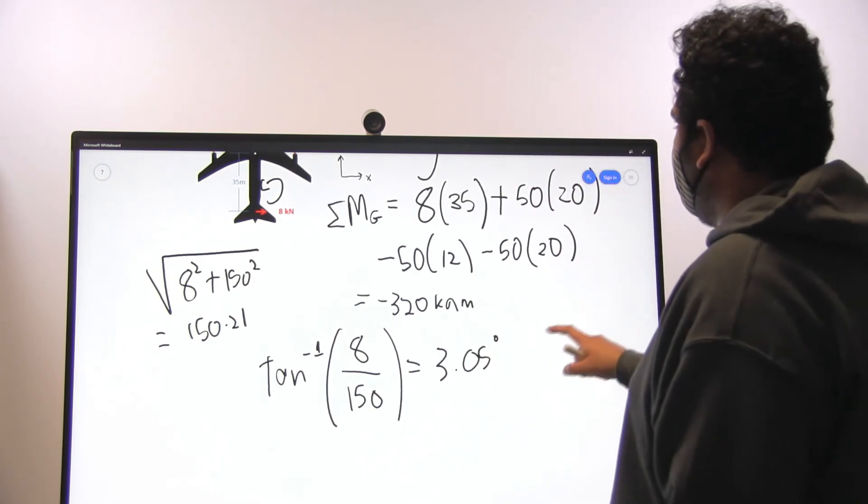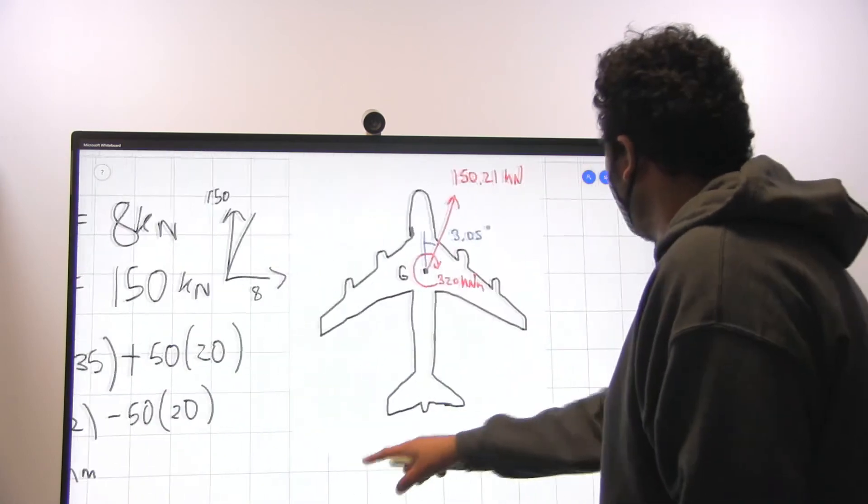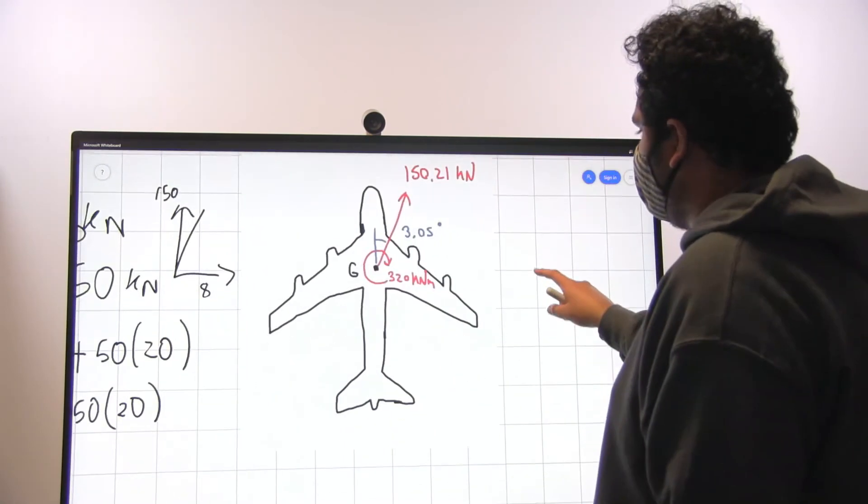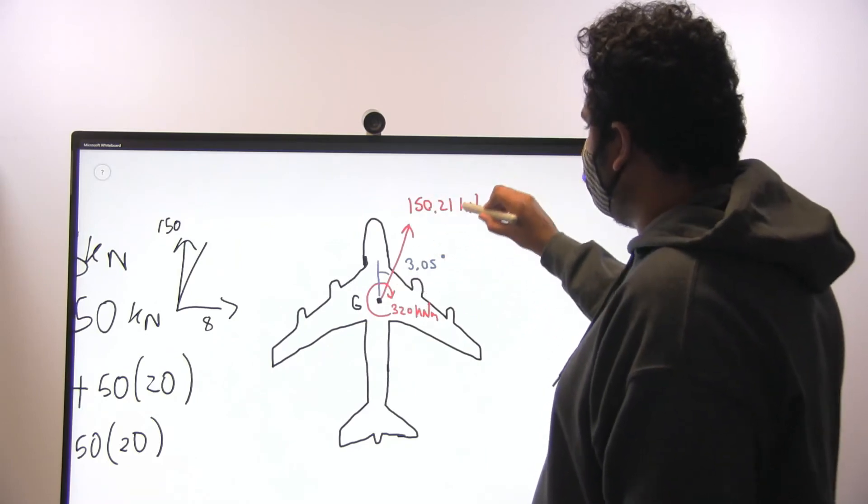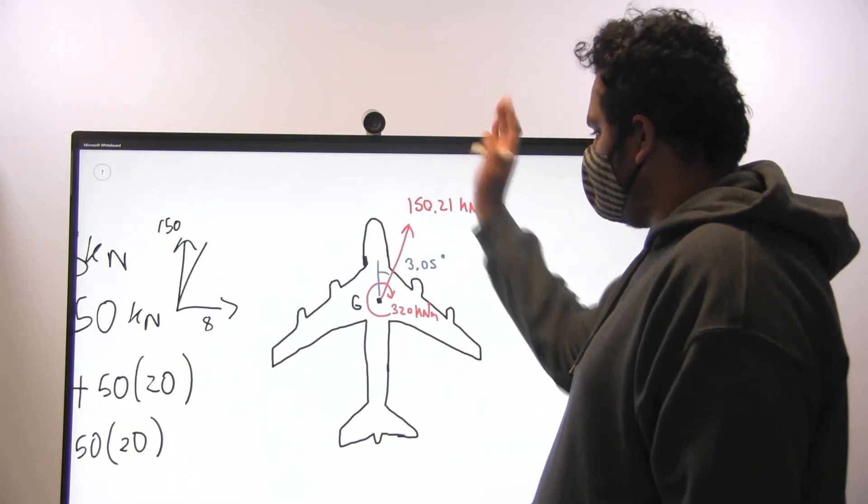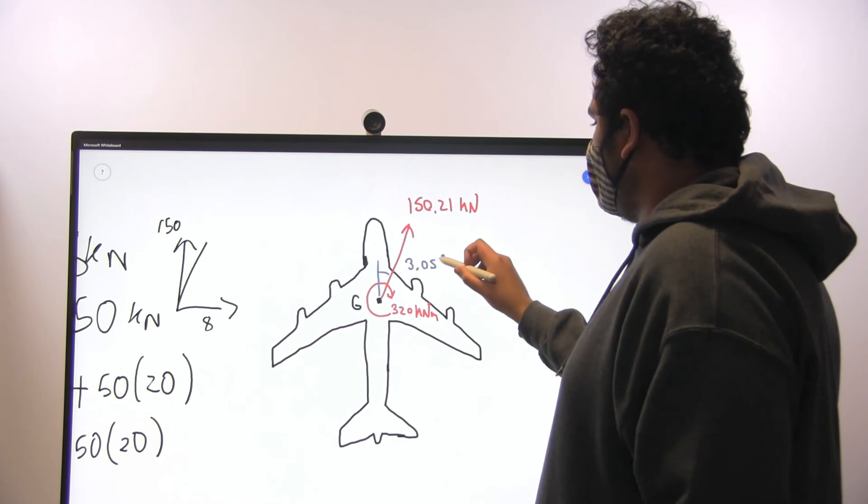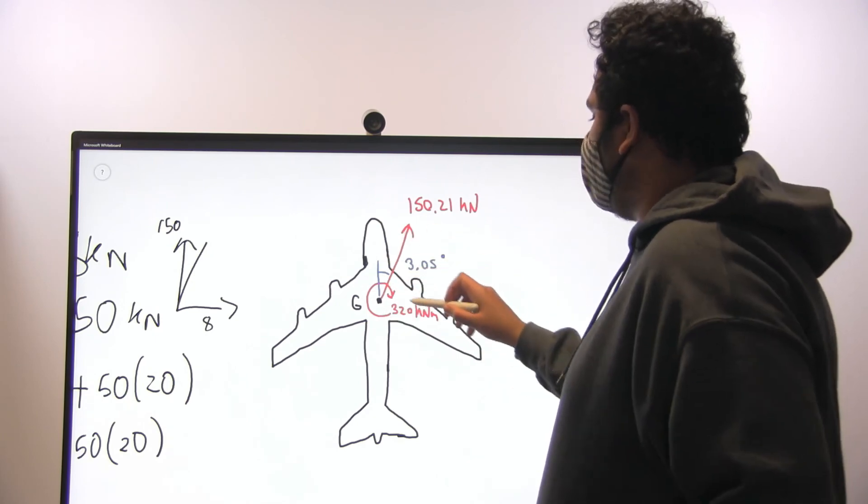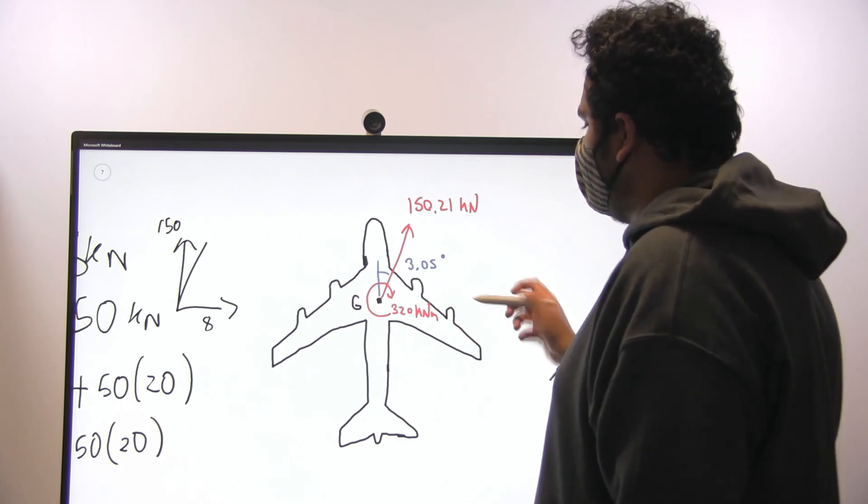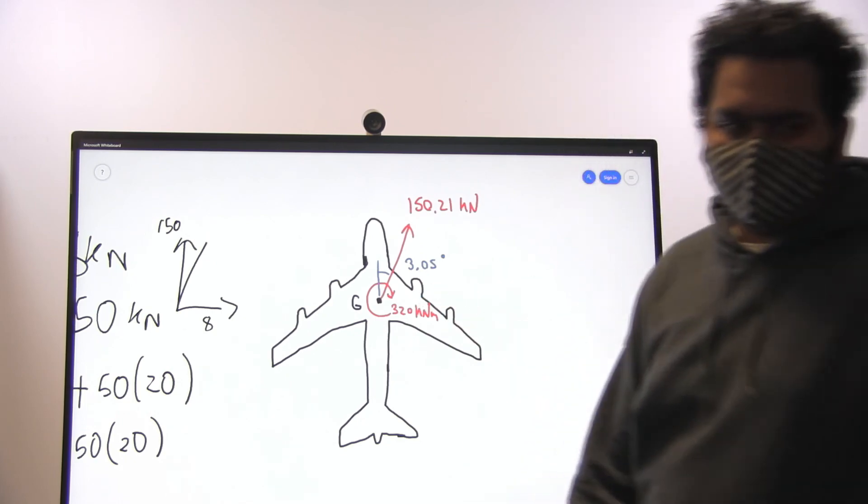So the overall plane is going to have a 150.21 kN force at an angle of 3.05 degrees, and the overall moment is clockwise with a 320 kN meter moment.